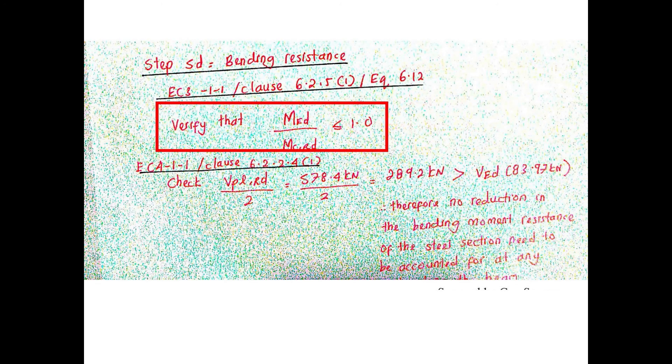Okay, the next thing is to verify the resistance of the proposed cross-section towards bending. This can be referred to EC3, clause 6.2.5(1), equation 6.12. As you can see here, the resistance towards bending must satisfy the condition given in the red box.